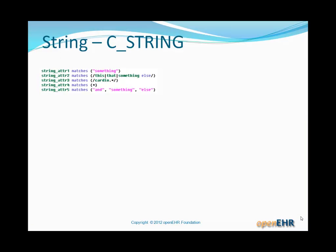Let's have a look at string. String constraining can be done in a number of ways. What you see there is a little bit of ADL source, a number of string attributes, they're just test attributes, and different types of constraints.